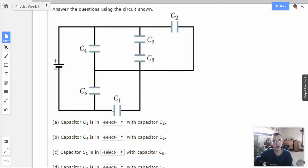Parallel. Series is defined as having the same current flowing through them. In parallel, it's defined as the same voltage across them.